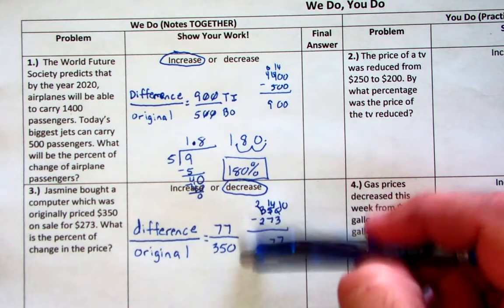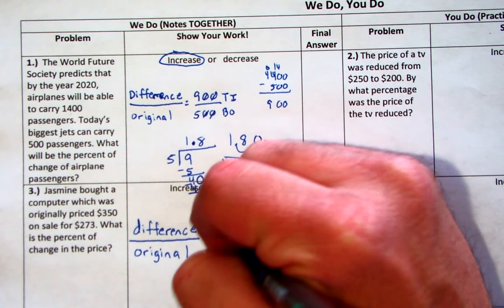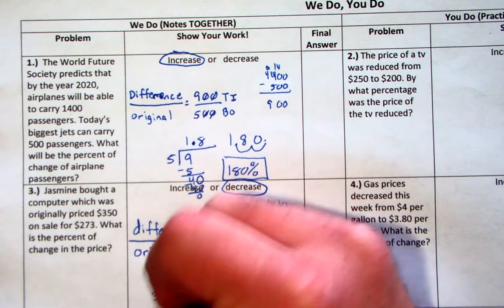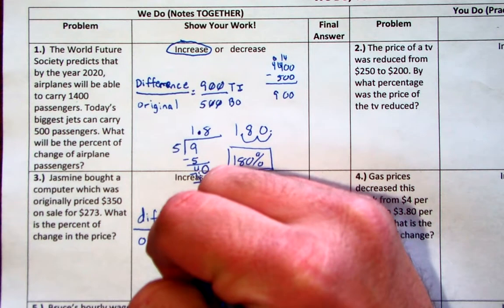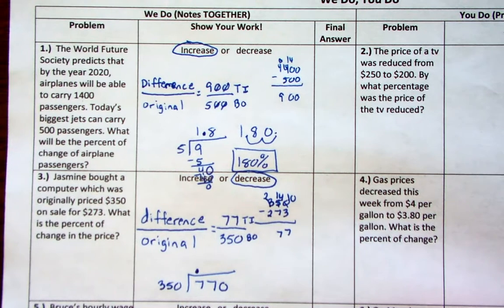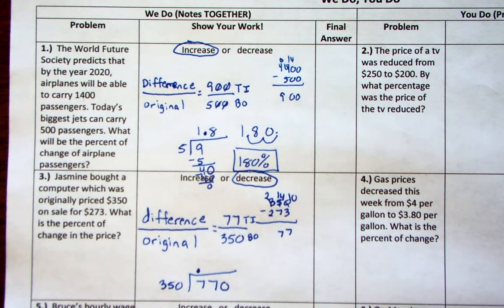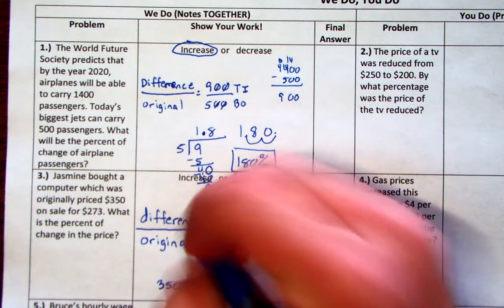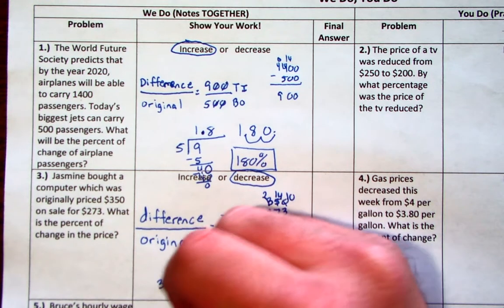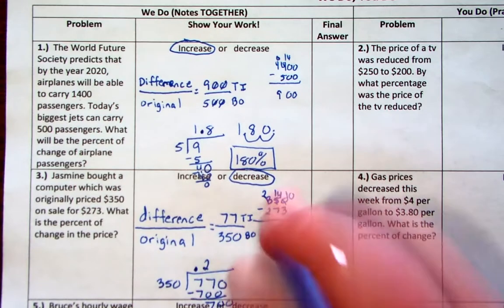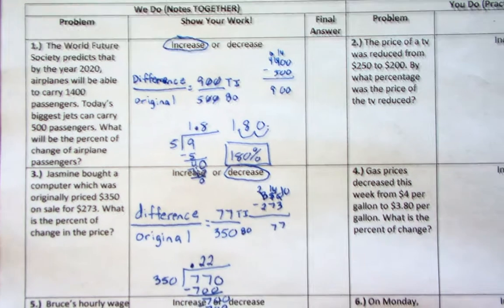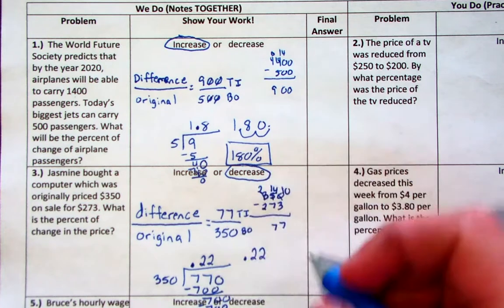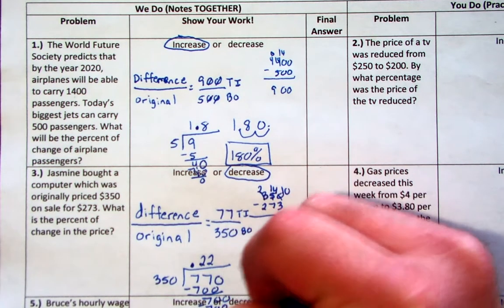Now top in, bottom out. Can 350 go into 77? No, it cannot — so add a decimal and add your zero. How many times can 350 go into 770? Well, 350 plus 350 is 700, so it can go in two times. You have a remainder of 70 — add another zero. 350 can go into 700 two times. Look at that — there's your decimal: 0.22. Now take your decimal, move it two places to the right, and there's your percent — it's 22 percent decrease.